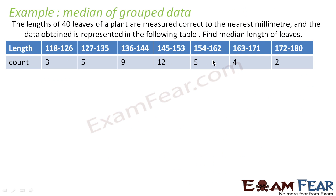Please look carefully — this is a slightly tricky question. The question says the lengths of 40 leaves of a plant are measured to the nearest millimeter and data is obtained. If you look at the class boundaries — 126, 127; 135, 136; 144, 145 — they are not the same, so this is not straightforward grouped data.